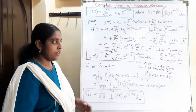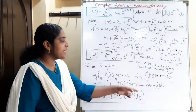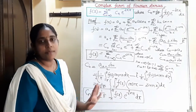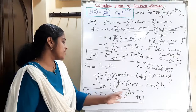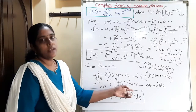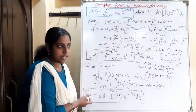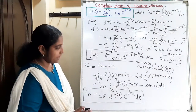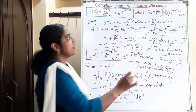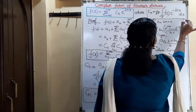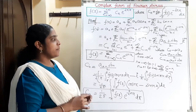Similarly, c_{-n} = (an + ibn)/2 gives cos(nx) + i·sin(nx) = e^(inx). For n = 0, the integral becomes (1/2π)∫_{-π}^{π} f(x)dx. So in general, whether n = 0, -n, or +n, the formula is cn = (1/2π)∫_{-π}^{π} f(x)e^(-inx)dx. Using this, we can solve problems more clearly.